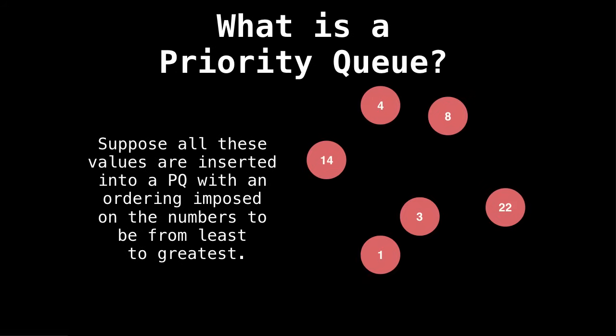Okay, let's go into an example. So suppose we have all these values that we insert into our priority queue on the right, and that we impose an ordering on the numbers such that we want to order them from least to greatest. So the smaller numbers have a higher priority than the bigger ones. So they will be removed from the priority queue first.